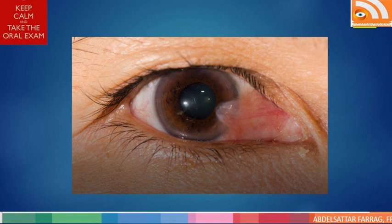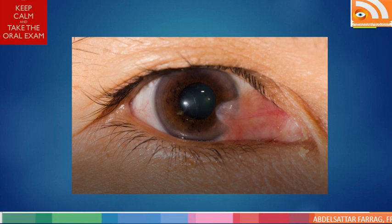This is a typical case of a viva exam scenario in the Glasgow exam. The discussion of the viva starts by describing the photo. A candidate can say: leads are normal and conjunctiva shows a pterygium. Here I will comment on the first part of our discussion, which is the description.